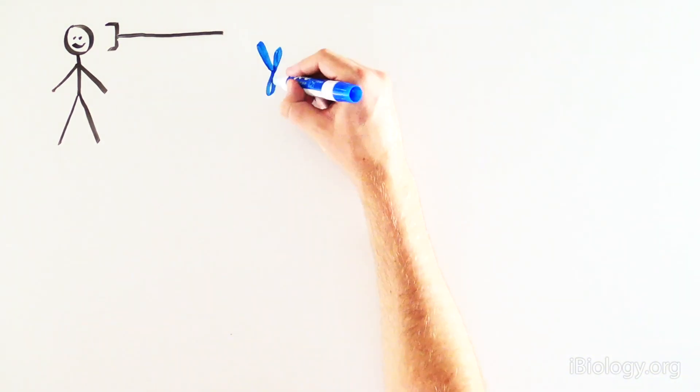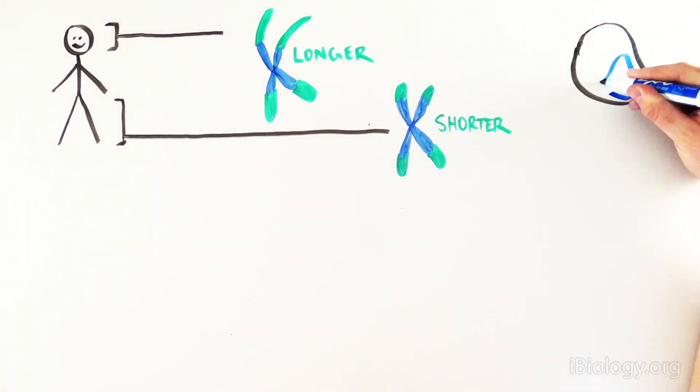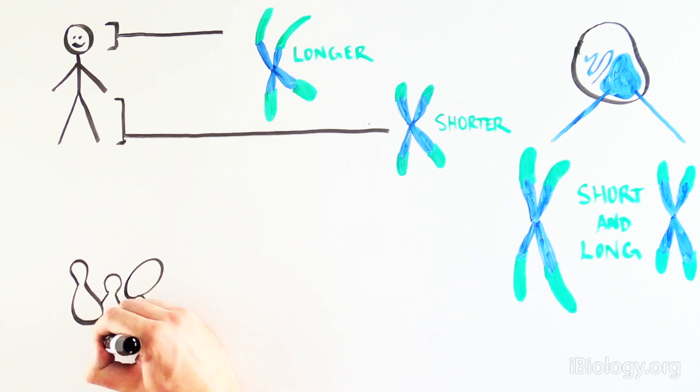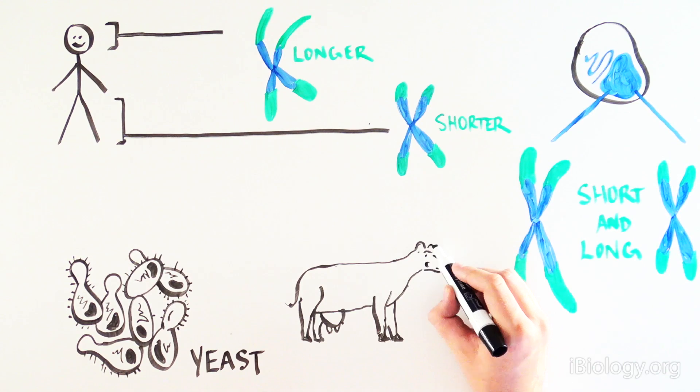But what was also curious was that the telomeres differed in length within one individual and even within one cell. The fact that all of these organisms had the same conserved sequence at the ends of chromosomes suggested that the telomere was very important.